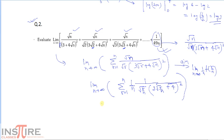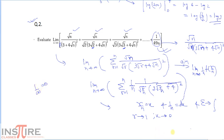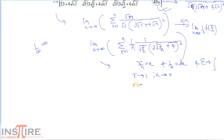Now put r/n = x and 1/n = dx. When r approaches 1, x = 1/n → 0 as n→∞. When r approaches n, x → 1. So the integral becomes ∫₀¹ 1/[√x · (3√x + 4)²] dx.